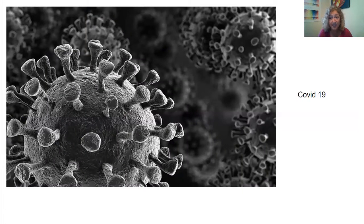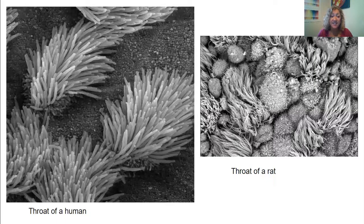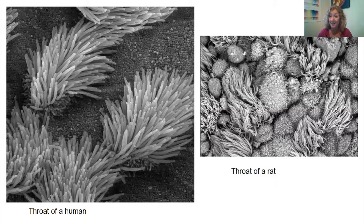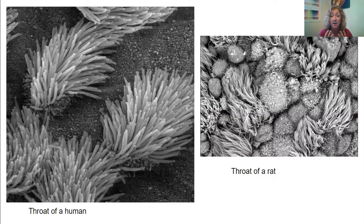This is a true COVID-19 virus. This is the throat of a rat versus the throat of a human — these are the cells of our throat. Scientists looked at the throat of a rat to understand why a rat can inhale and eat bacteria and all these germs and not get sick, when humans, if we were to eat or ingest the same things, would get sick. It's because look at how much more is in the throat of a rat that would catch any foreign substance you wouldn't want in the body versus the human.